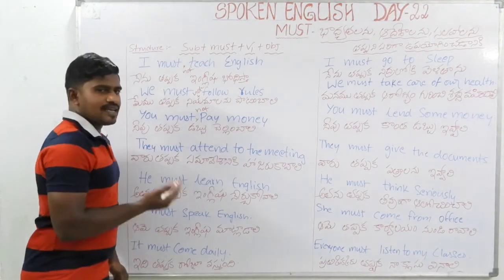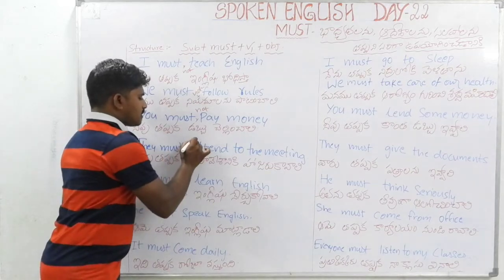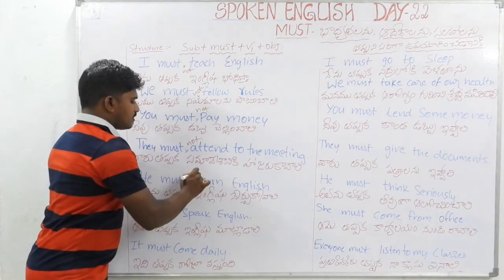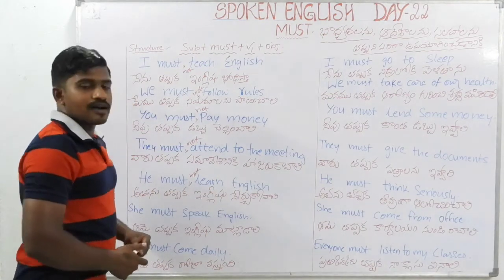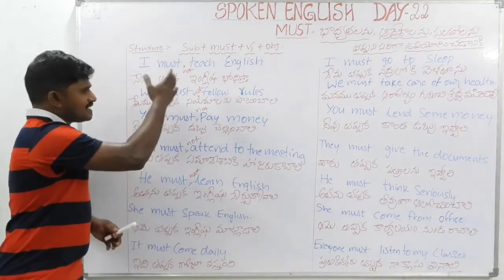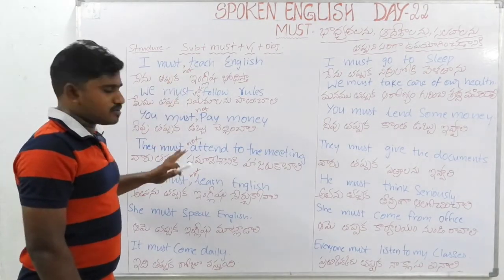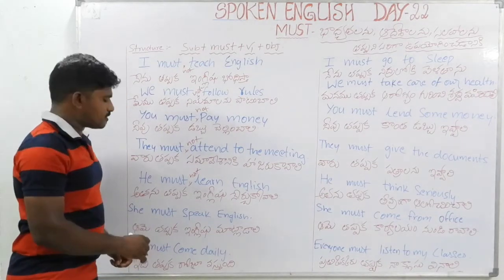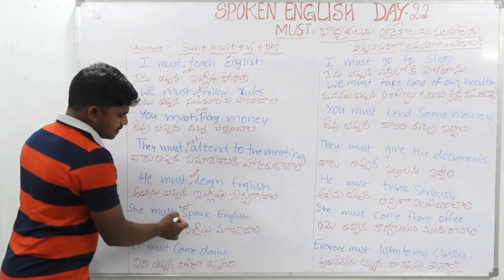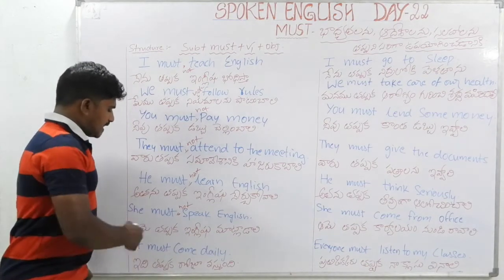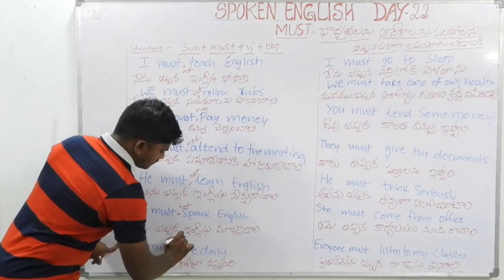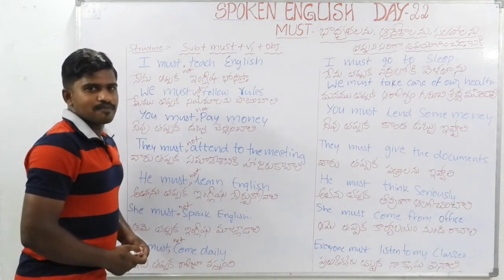They must attend meetings — negative: they must not come to meetings. He must learn English — negative: he must not learn English. She must not learn English. She must speak English — negative: she must not speak English. It must come daily — negative: it must not come daily.